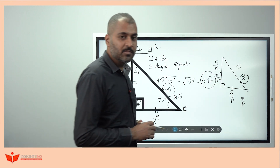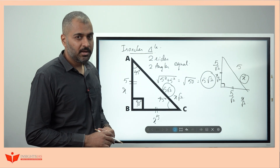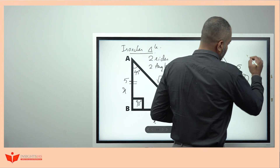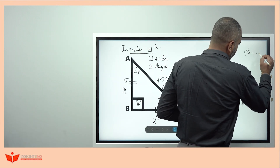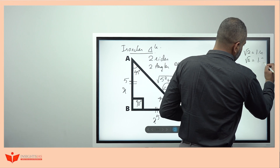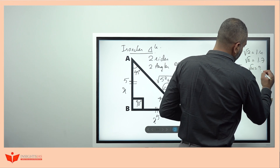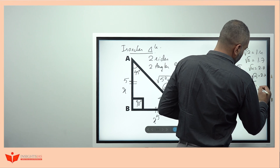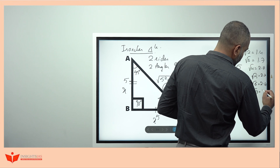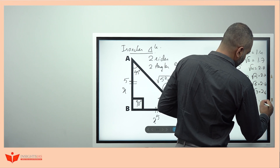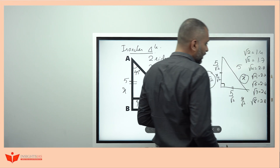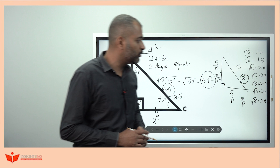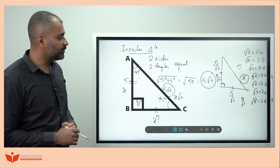Remember these values. Also try to remember approximate square root values to at least one decimal point: √2 ≈ 1.4, √3 ≈ 1.7, √4 = 2.0, √5 ≈ 2.2, √6 ≈ 2.4, √7 ≈ 2.6, √8 ≈ 2.8, √9 = 3. From √5 onward, the pattern increases by 0.2 each time: 2.2, 2.4, 2.6, 2.8.